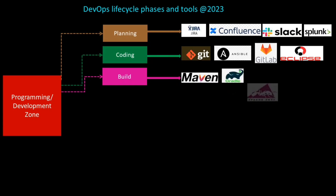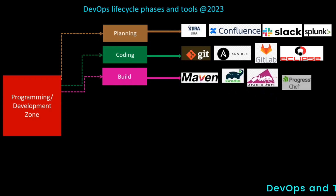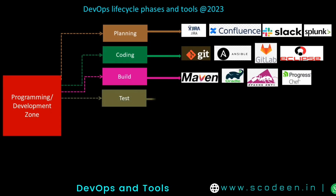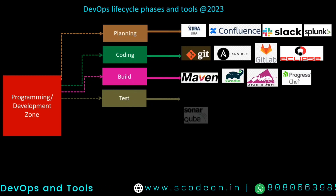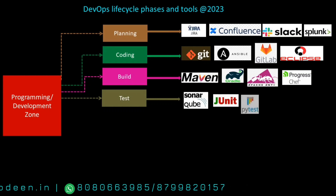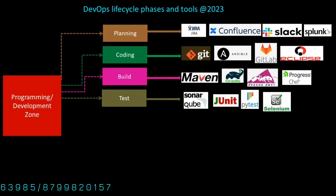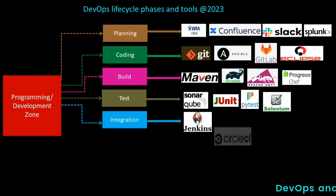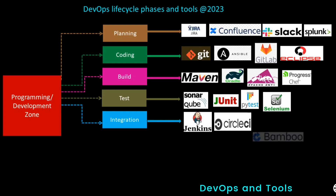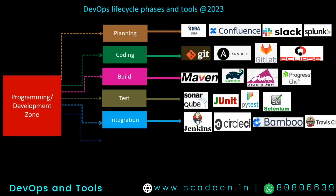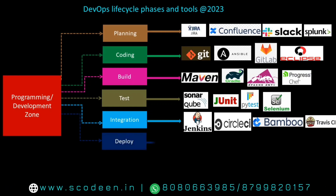Next comes the build phase, where we can use Maven, Gradle, and Apache Ant. In the test phase, tools include JUnit, SonarQube, PyTest, and Selenium. During the integration phase, we can use Jenkins, CircleCI, Bamboo, and Travis CI.